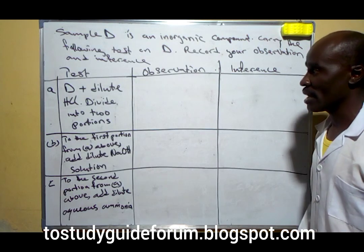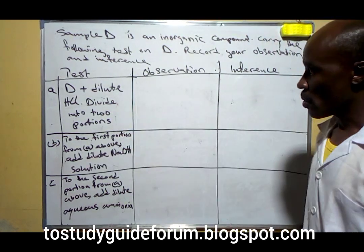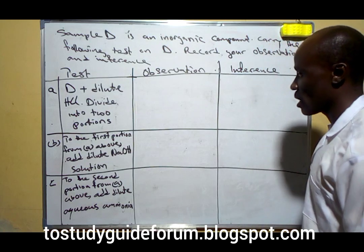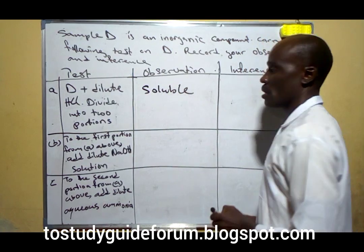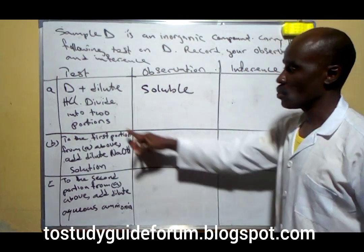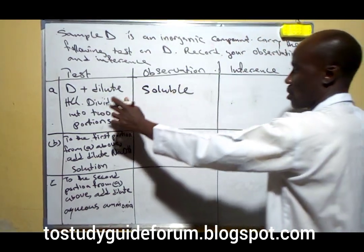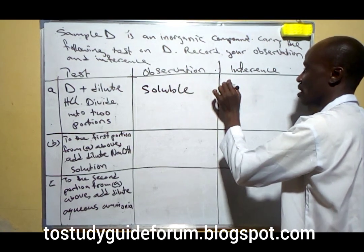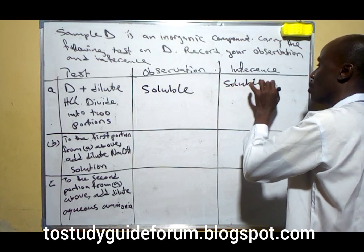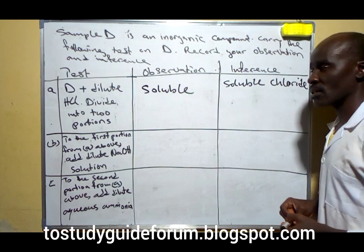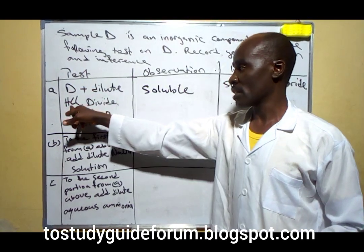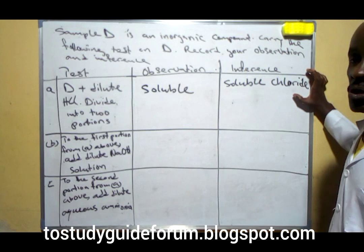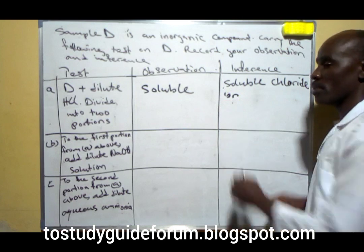Based on the test, the first one says D plus dilute hydrochloric acid. When you add dilute hydrochloric acid, you find that the compound is soluble in hydrochloric acid. Now we divide into two portions. Since it's soluble in hydrochloric acid, the inference means that the ion there is a soluble chloride. Chloride ions are present.